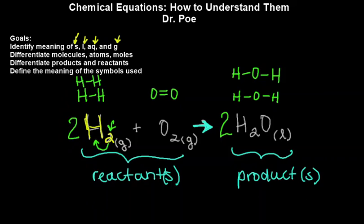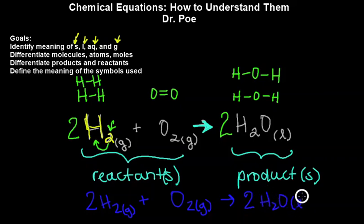So our final equation is going to be 2H2 gas, plus one molecule of O2. So we don't have to write the 1 there, but this is also gas, yields two molecules of H2O liquid.